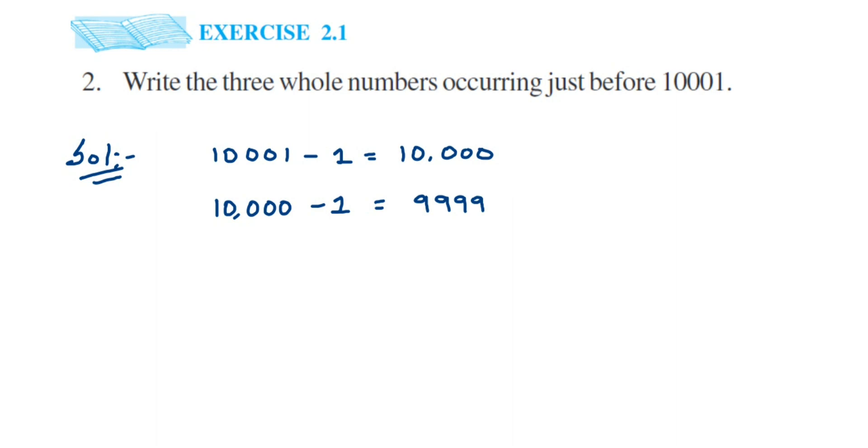So I have to again subtract one from this 9999. 9999 minus 1 will be equal to 9998. So 10,000, 9999, and 9998 are the three numbers occurring just before 10001. We have to subtract one if they are asking for numbers before.